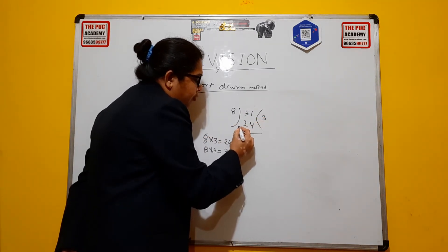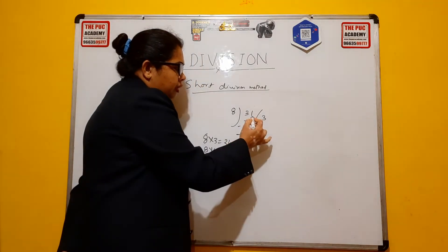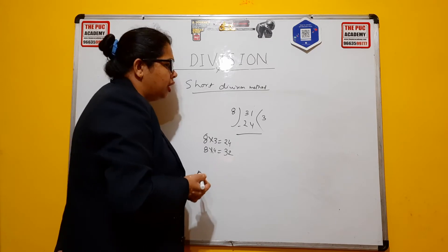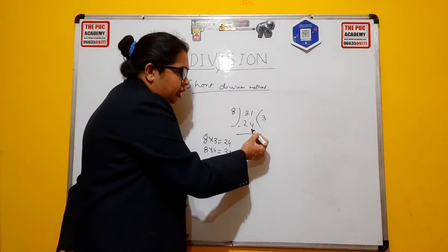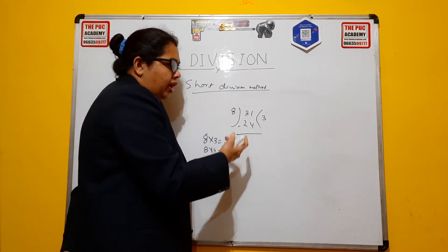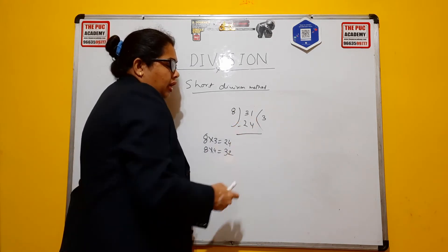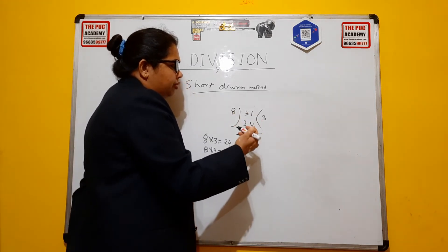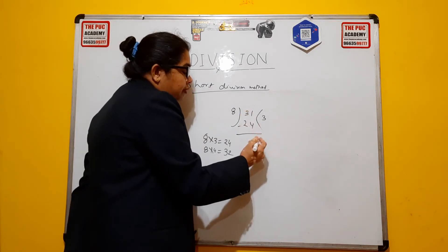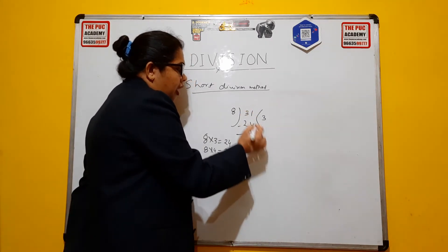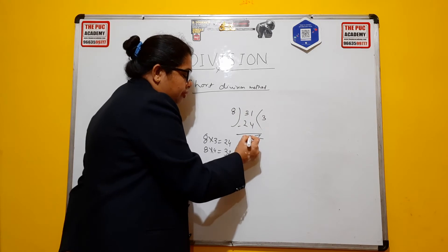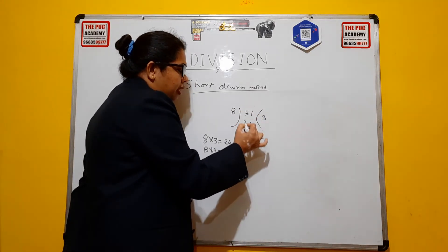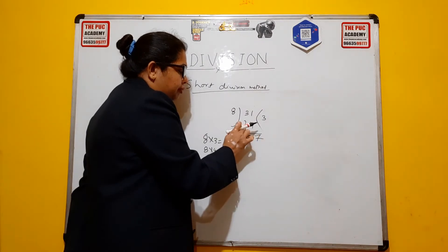And now here, we have to subtract. So you can consider this 1 as 11 because it is a smaller number than 4. So we have to take a borrow from this. So this will become 11. 11 minus 4 is 7, and 3 minus 3 will be 0 because we have taken one borrow. So you can write here borrow.